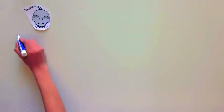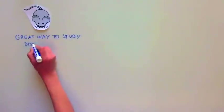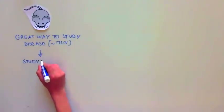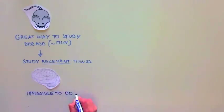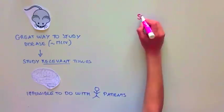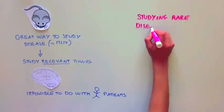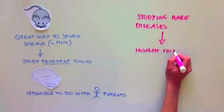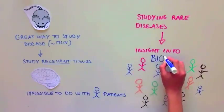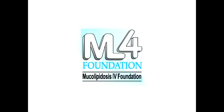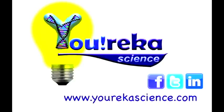Mouse models have provided a great way to study diseases such as ML4 by giving scientists the ability to study relevant tissues — in this case the brain — that would be impossible to do with patients. Studying rare genetic diseases such as ML4 provides insight into everyone's biology by dissecting out new functions of existing proteins. The findings presented here were funded in part by the ML4 Foundation. This video has been provided to you by Eureka Science.